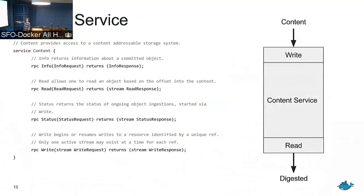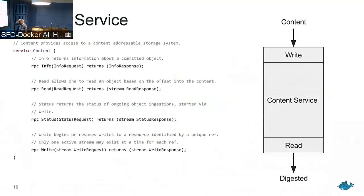In code that interacts with containerd you don't need to worry about hashing it right — as long as you run it through the content service and retrieve it through the content service, and as long as that content service is part of your trusted domain, you should be fairly safe. This simplifies a lot of code that has become very complex in Docker today.